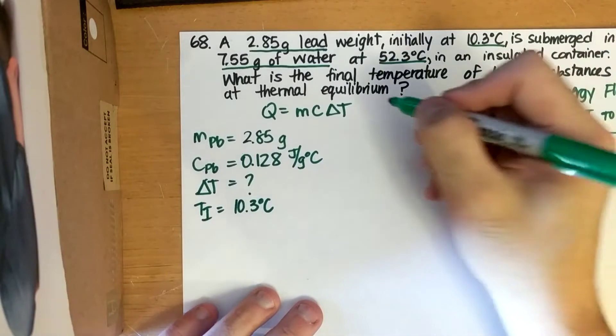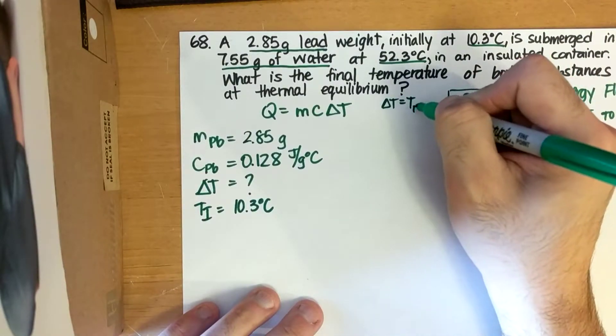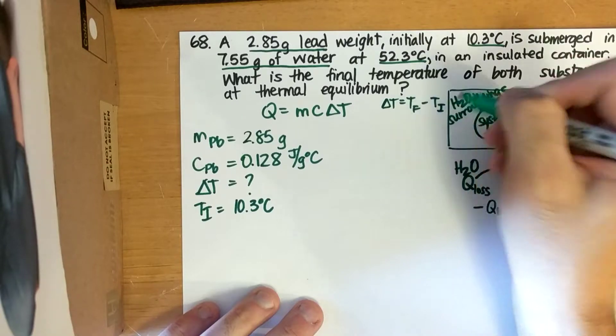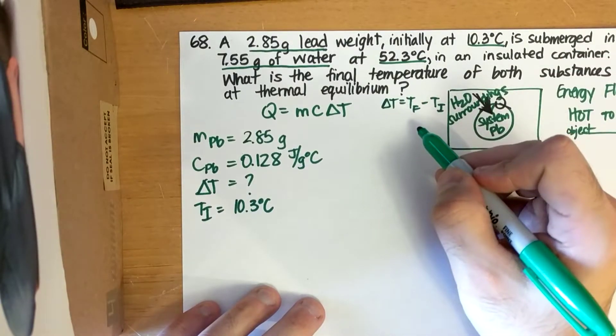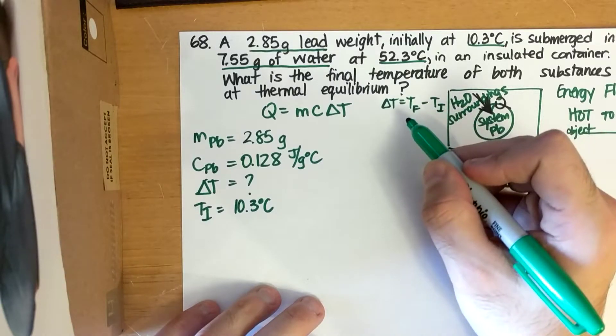Okay, and then just a side note, delta T is equal to T final minus T initial. That little F means final. That little I means initial. So my final temperature minus my initial temperature is my delta T. So we're going to put that in our back pocket for later.